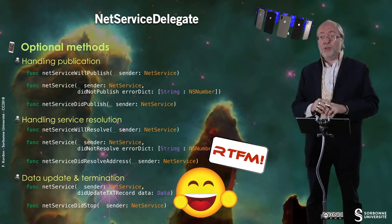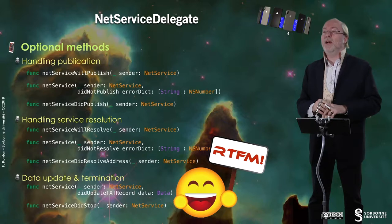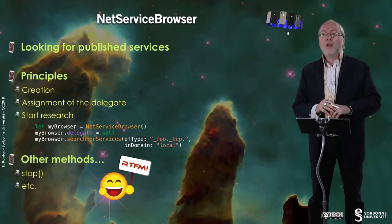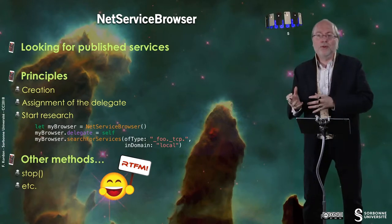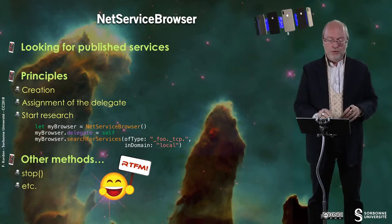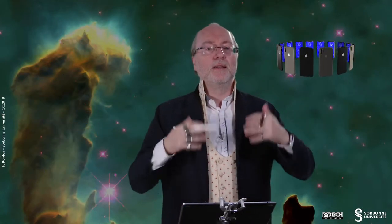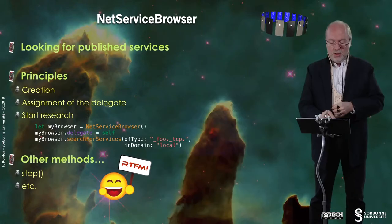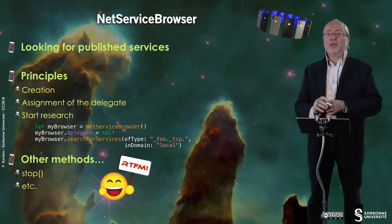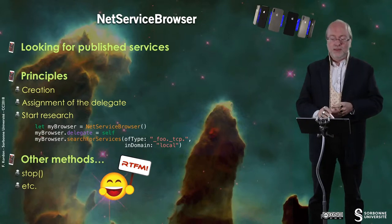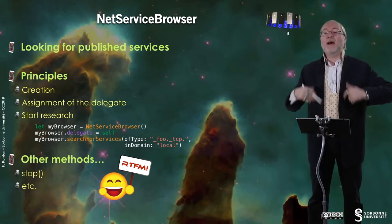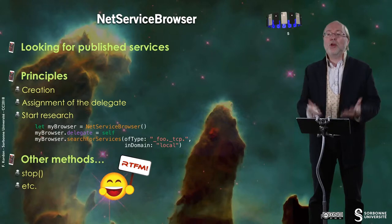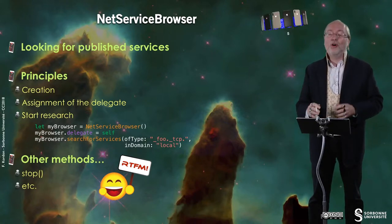For more information, I strongly encourage you to have a look at the fantastic manual. When you are looking for published services, you need a NetServiceBrowser. The principles are common: you create it, you assign a delegate — a delegate that answers to the protocol — and you start the search. Here I show you how to do that in Swift. NetBrowser is NetServiceBrowserDelegate; I set the delegate and request my browser to search for a given service on a given domain.